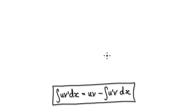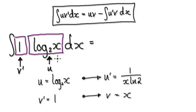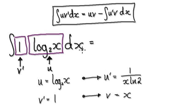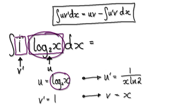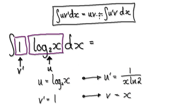So now to integrate this, we would use integration by parts. Set this thing here to be u, and then set the 1 here to be v prime. So if this is u, then differentiating gives you u prime. If this is v prime, then v would just be x.